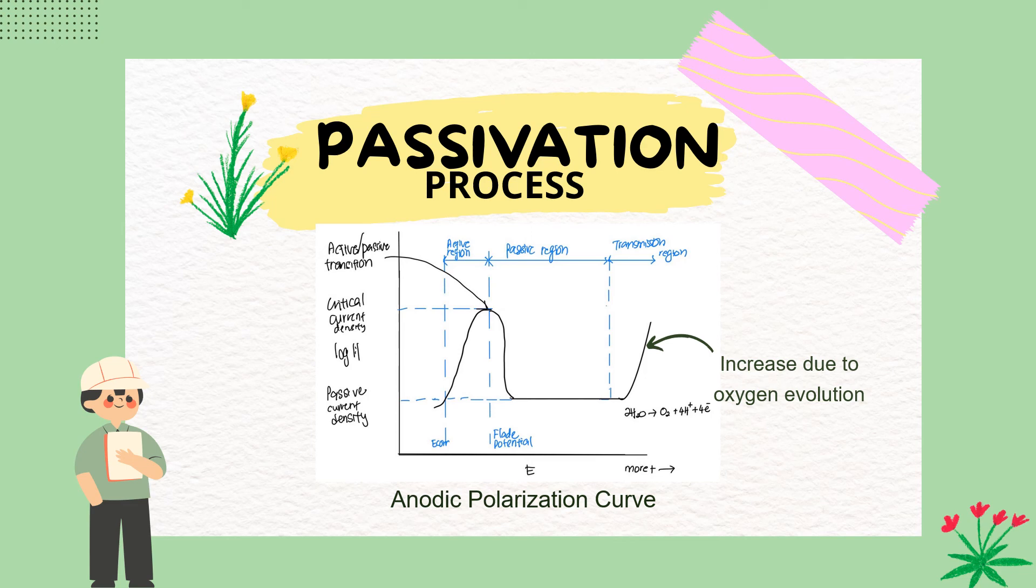In the so-called active area of passive metals, the current increases continuously with increasing voltage until the passivating layer develops, at which time the current rapidly decreases but subsequently increases in anodic potential. Oxygen evolution is responsible for the later growth in anodic potential. Metals that are prone to passivation will exhibit this behavior.